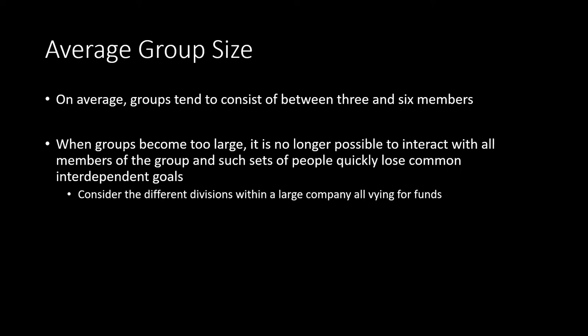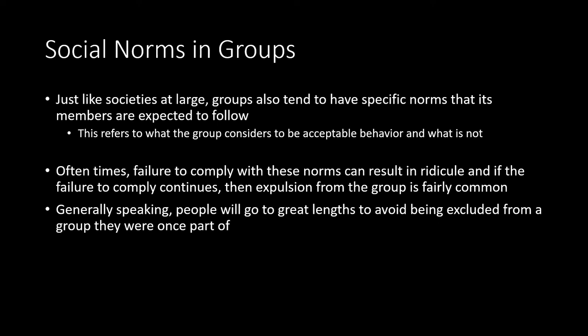For example, in one big company, departments like production, marketing, advertising, patent, and HR may all be vying for the same funding, making them not truly a single group. Just like societies, groups also have norms — acceptable behaviors that members are expected to follow. As an individual, you could be a member of several groups, each with their own specific norms, though norms can overlap depending on the groups.